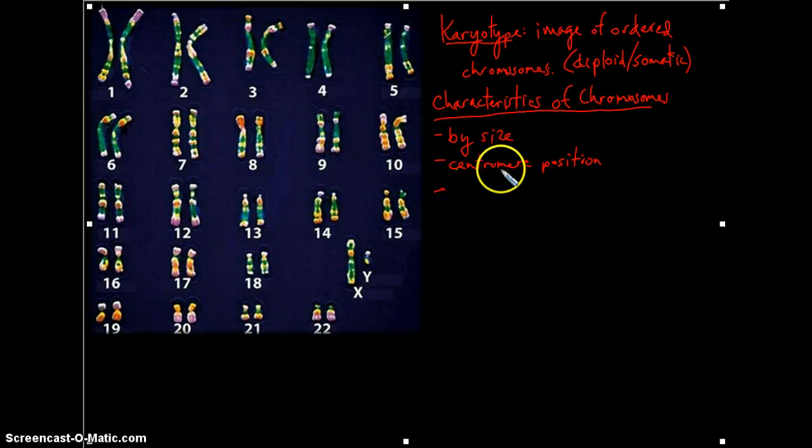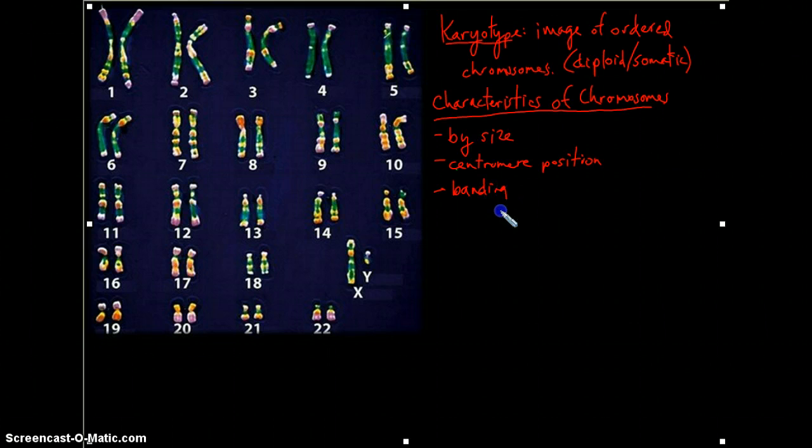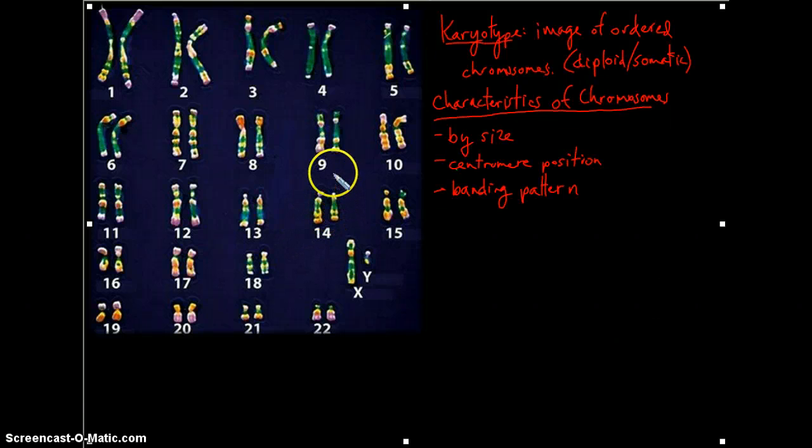And finally, they will differ by their banding pattern. That results from the uptake of different types of stains by different portions of the chromosome. So they'll each have their unique size, shape, and banding pattern.